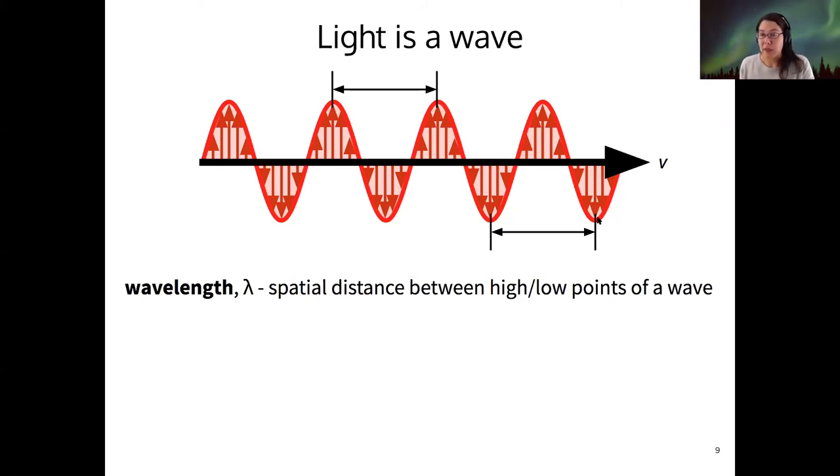This is similar to how we measured period for the Cepheid variables, except since we're measuring in space, then that means that this has units of distance. All right, so where the period had units of time, this wavelength has units of distance.